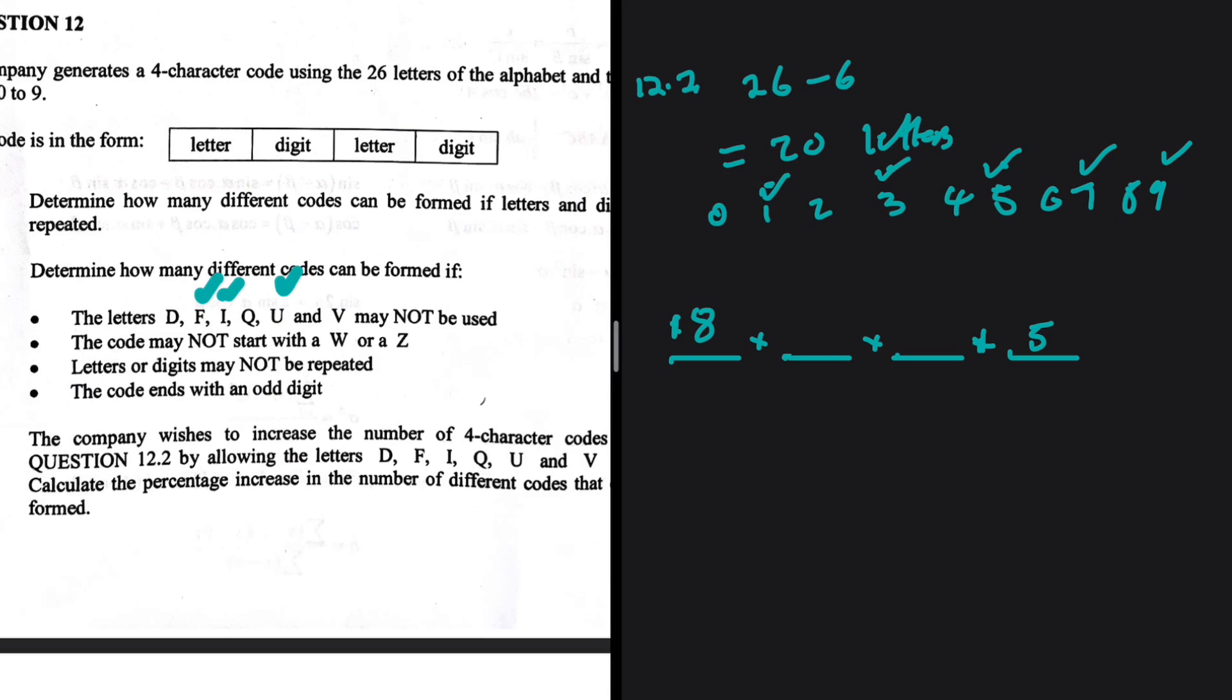The second spot—do we have any condition there? No, we just need a digit. But we have already exhausted one digit on the last spot, one odd digit. So of the 10, we are left with nine. And on the third spot, we've already used one of the 20 letters on the first spot, so we are actually left with 19 there on the third spot.